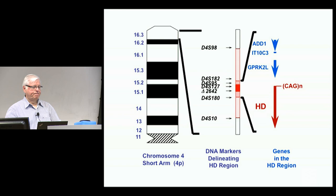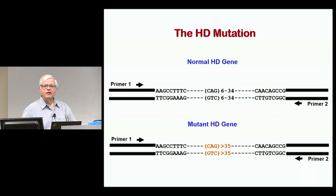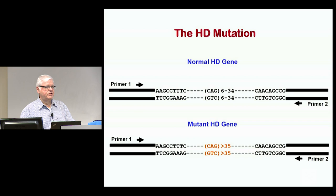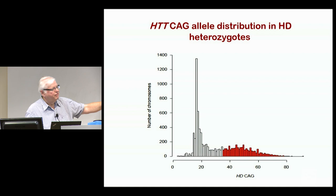We set out to generate markers with simple sequence repeats and did generate a number that homed that region down. One of the markers we looked at was a CAG repeat, and that turned out to actually be the defect. When you PCR amplify that sequence, normal individuals will have a variation at that site anywhere from six CAGs to 34 CAGs. An individual with Huntington's disease will invariably have more than 35 CAGs. So the difference between a Huntington's disease-causing chromosome and a normal chromosome is as little as one CAG.